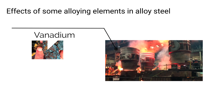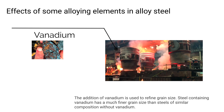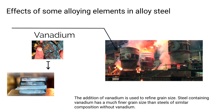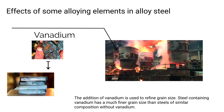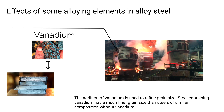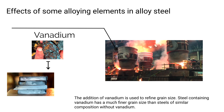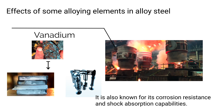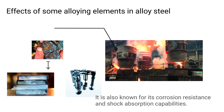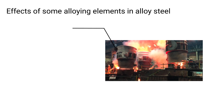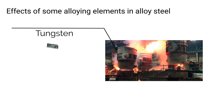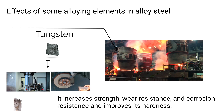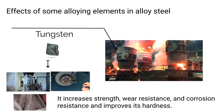Five, molybdenum — molybdenum improves the stability of carbide, thereby improving the strength, hardness, toughness, and weldability of the steel. Six, vanadium — the addition of vanadium is used to refine grain size. Steel containing vanadium has a much finer grain size than steels of similar composition without vanadium; it is also known for its corrosion resistance and shock absorption capabilities. Seven, tungsten — tungsten increases strength, wear resistance, and corrosion resistance, and improves hardness.